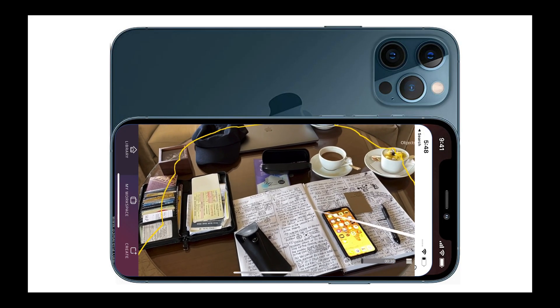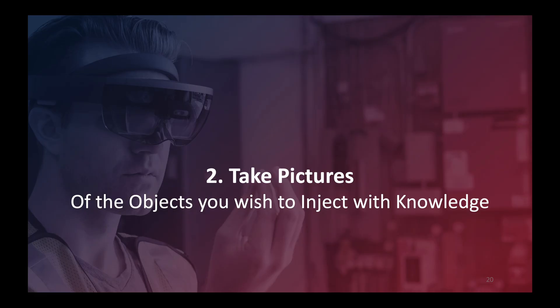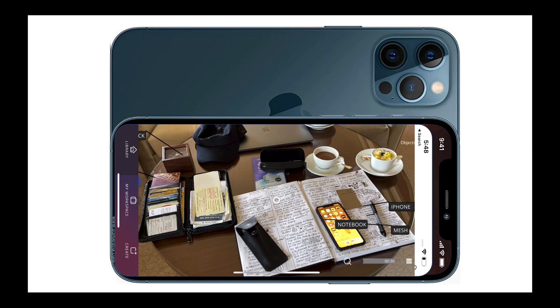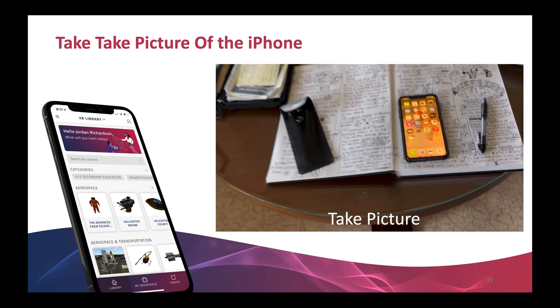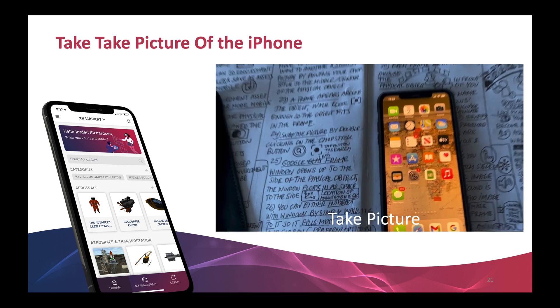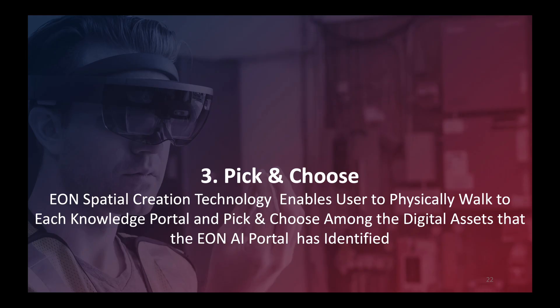So now there's the digital twin — and now it's invisible. All that remains is the ability to see the various annotations. It's time to inject knowledge into my XR experience. For that, I take pictures of the objects I wish to inject with knowledge — in this case, the phone. Now comes what we call pick and choose. This is where EON Spatial Creation Technology comes to strength, because it enables users to physically walk through that environment to each of the knowledge portals and pick and choose among the digital assets that the EON AI portal has identified.